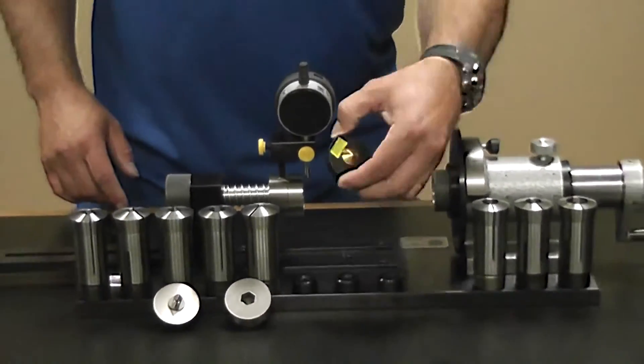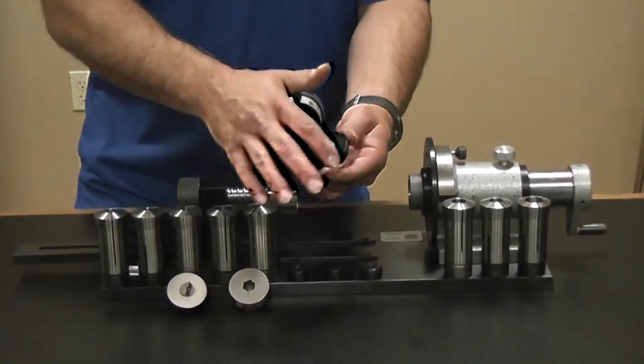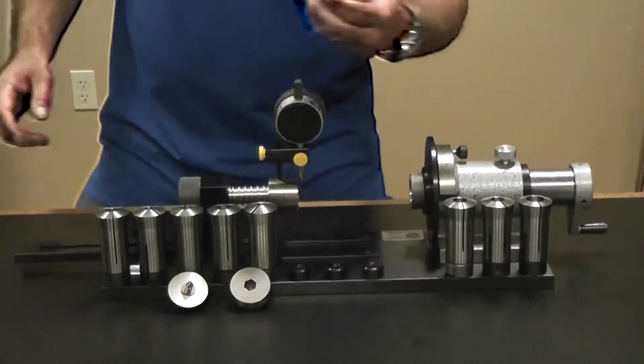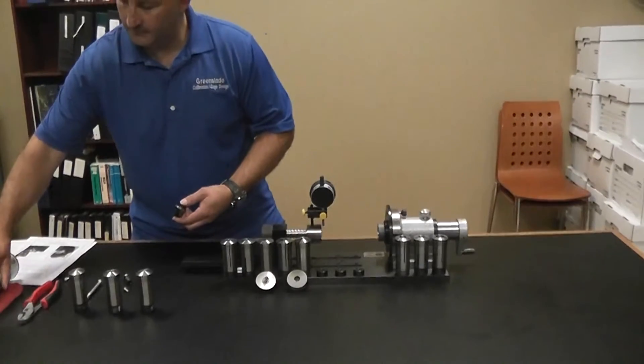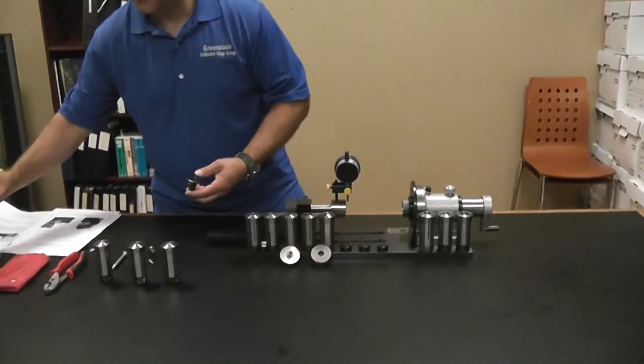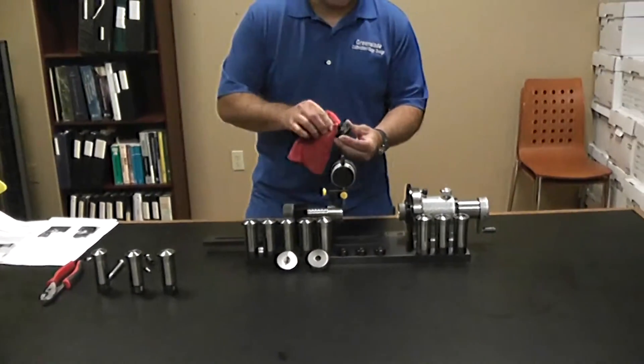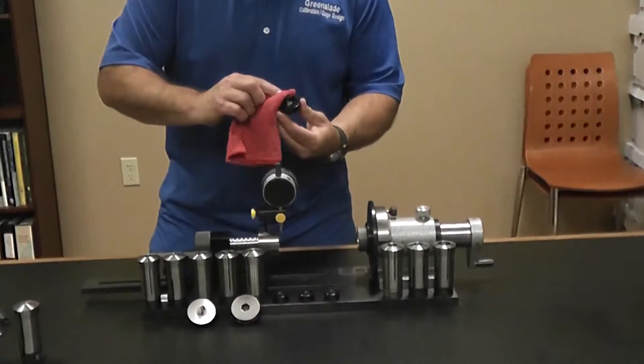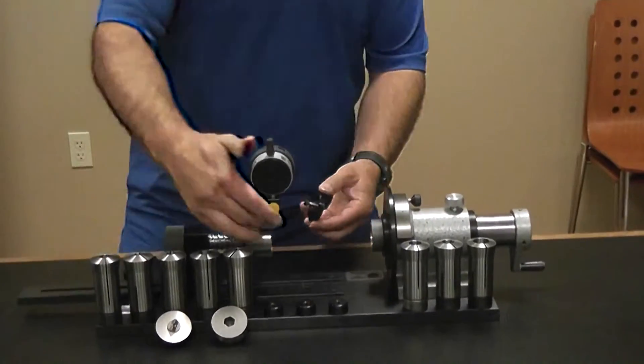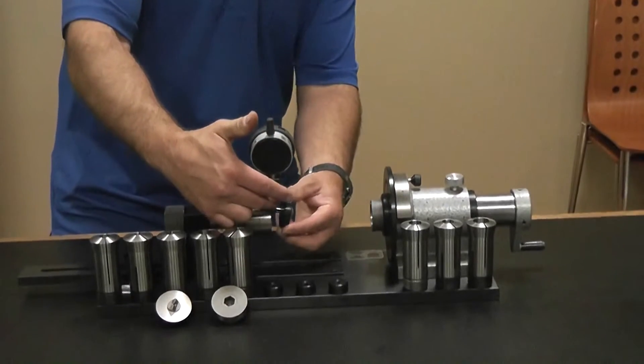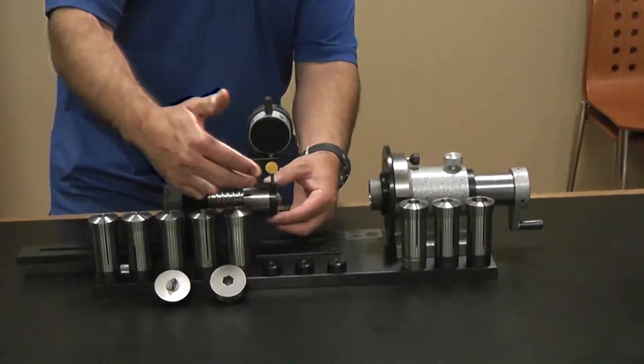Today we're going to start with our recess concentricity cone. First thing you want to do with all these elements is you want to make sure that there's a light coating of oil on the back. So just rub a little bit of oil on there. Then we move this indicator stem out of the way and place it into position.